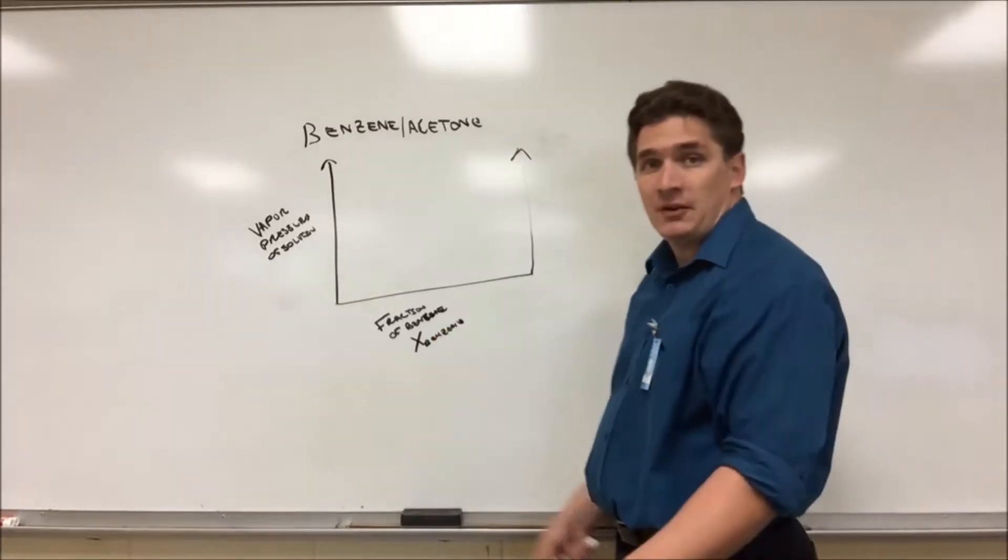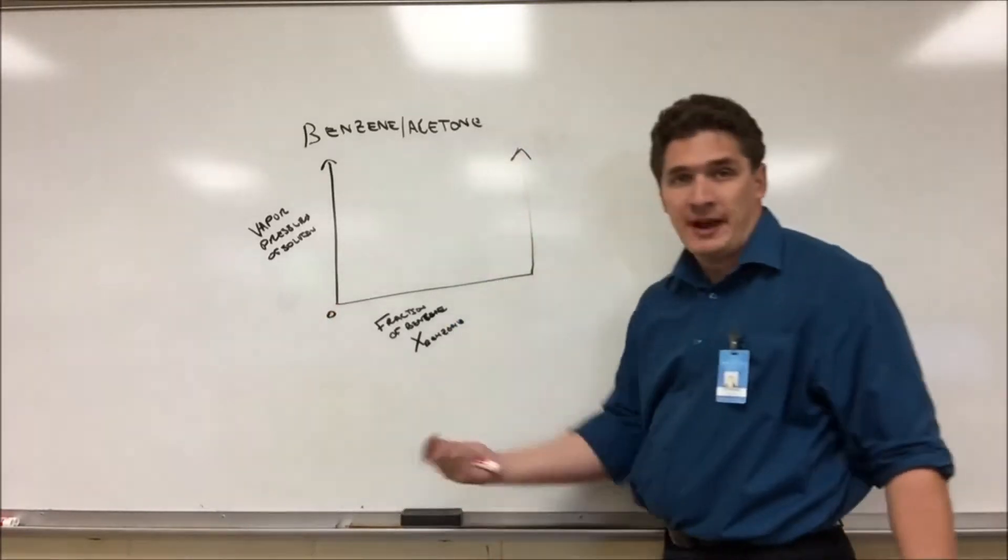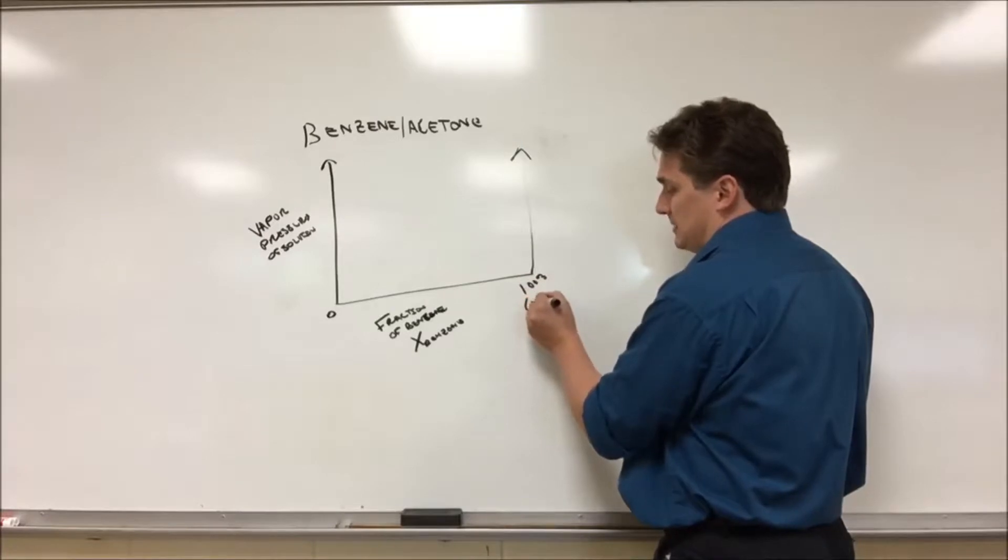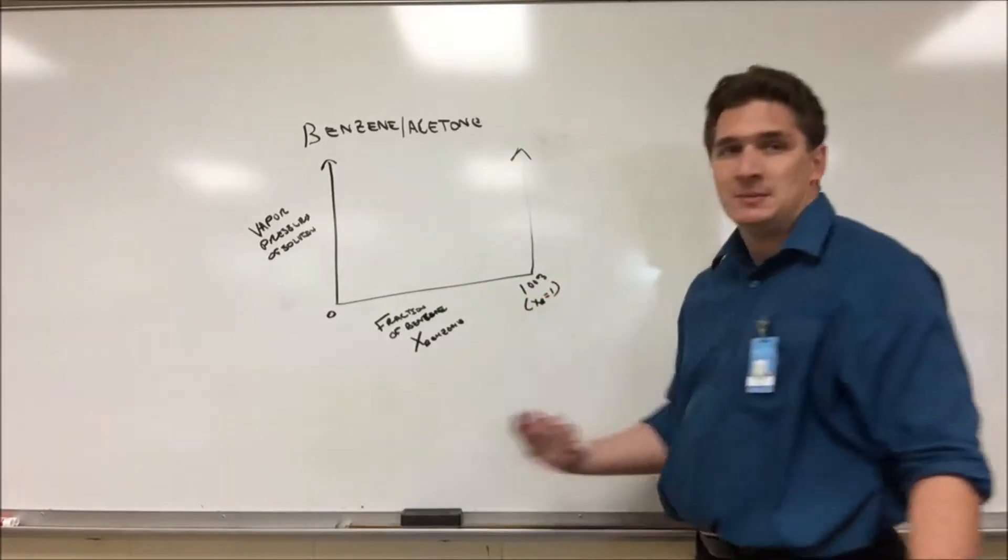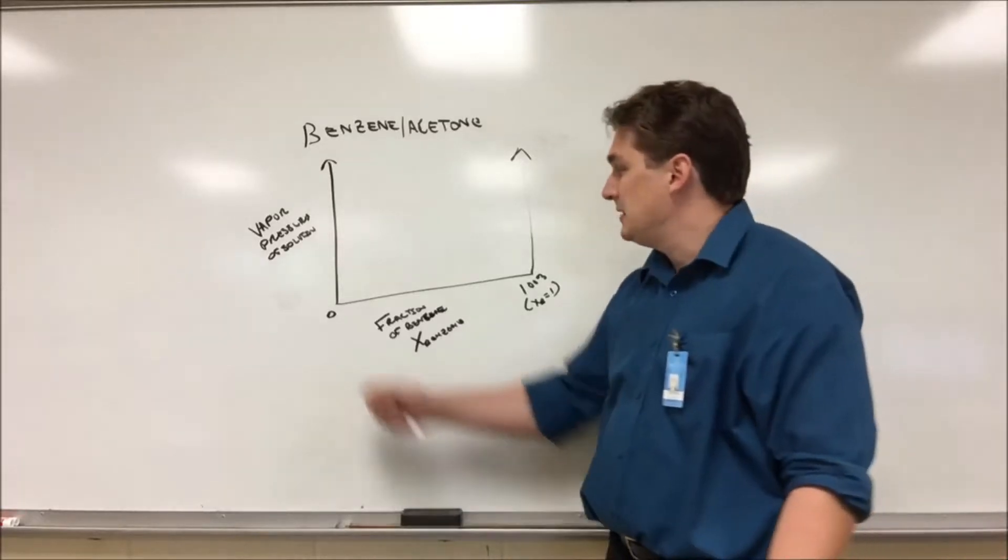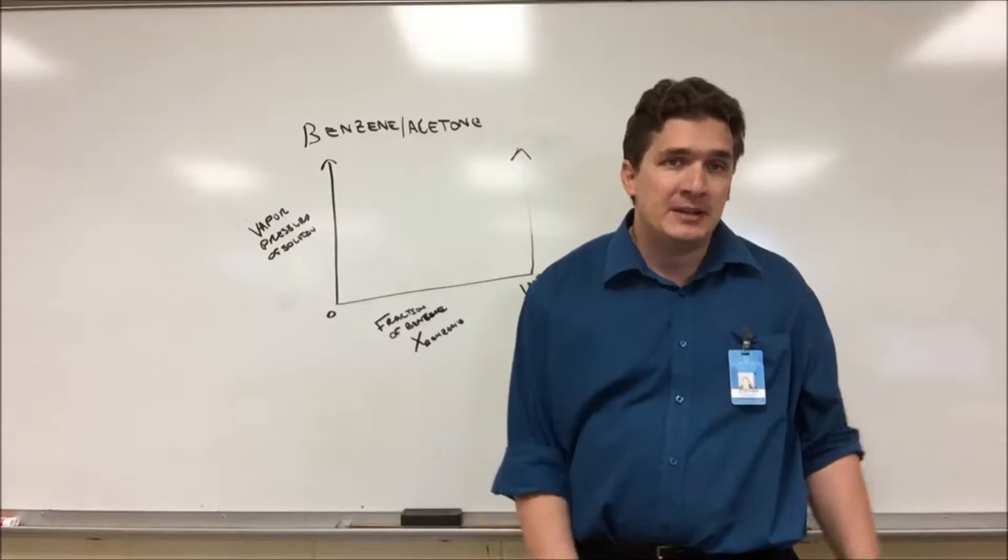Now our fraction can be anywhere between zero and one. So we either have zero benzene, meaning we have a pure acetone solution, or we have 100%, X of benzene equal to one, so we have a 100% benzene solution. Now what do you expect the vapor pressure of this solution to be if you don't have any benzene in it?